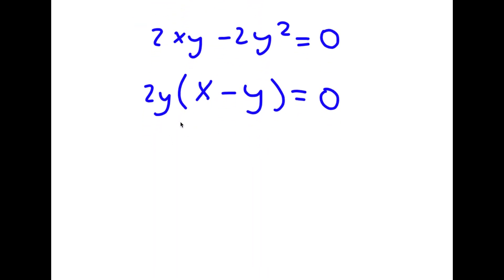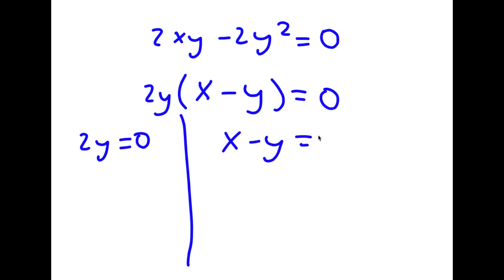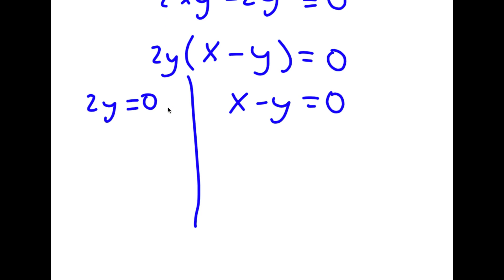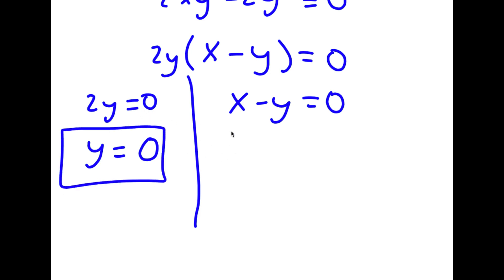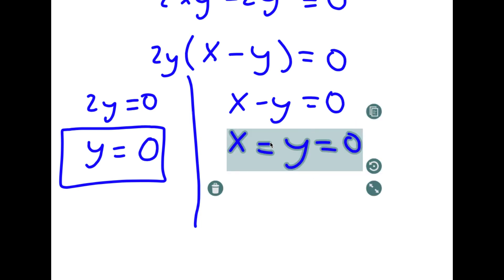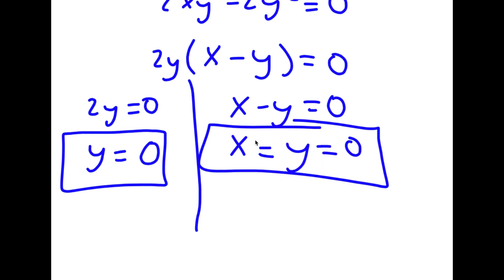This gives me two equations: 2y equals zero, and x minus y equals zero. For 2y equals zero, this means y equals zero. And if x minus y equals zero, this means x equals y. Since y equals zero, x is also equal to zero. So both variables are equal to zero.